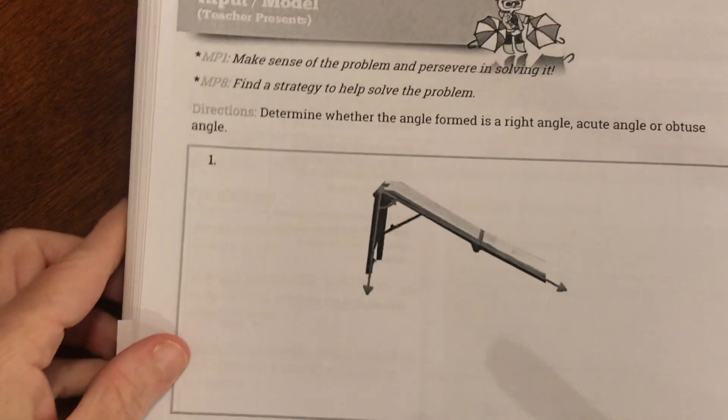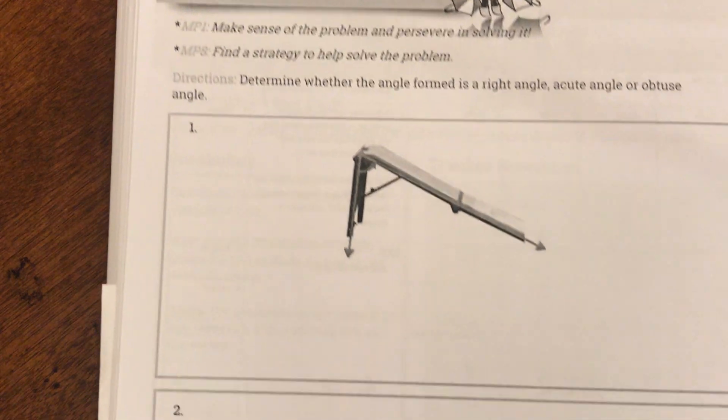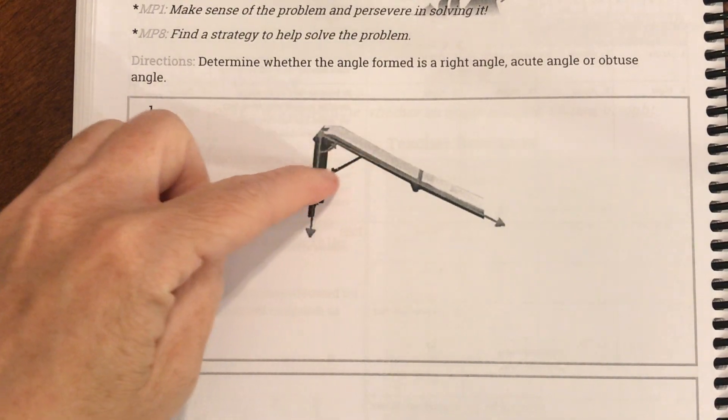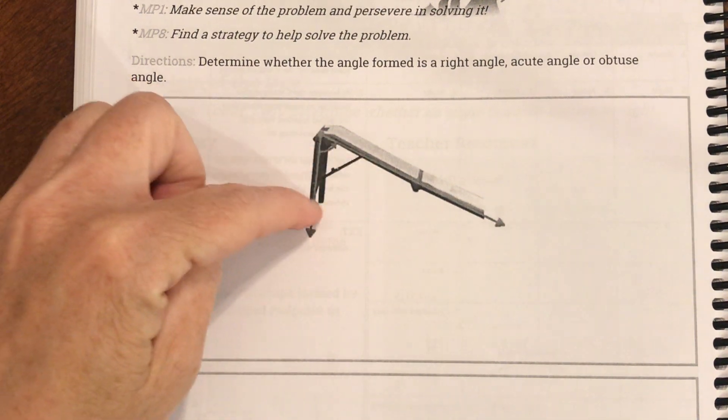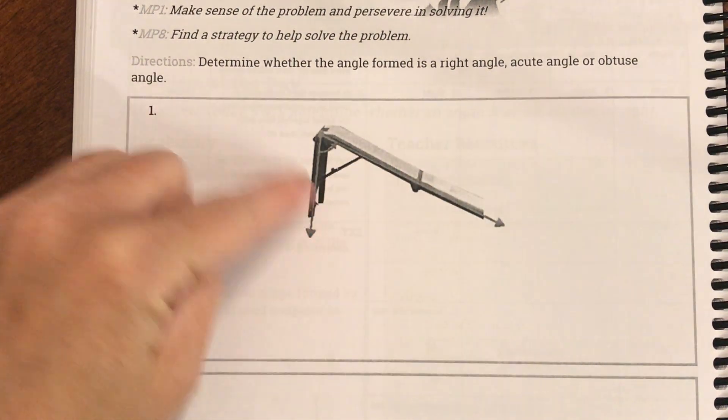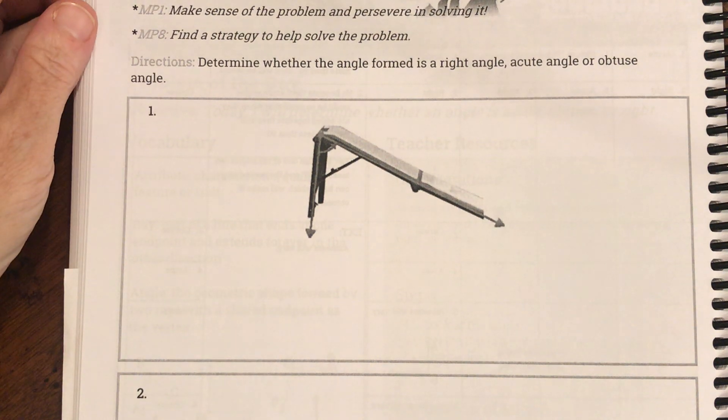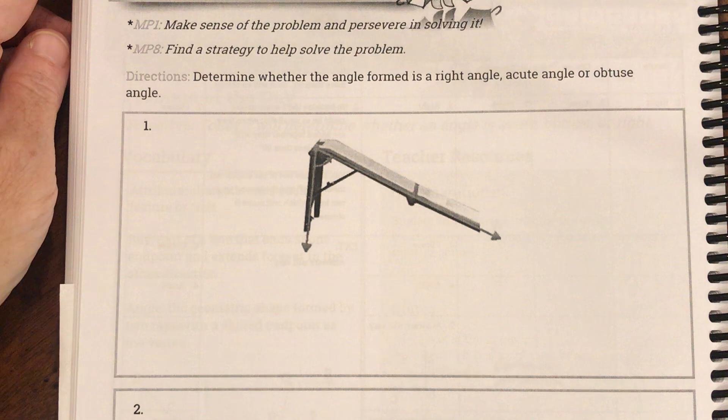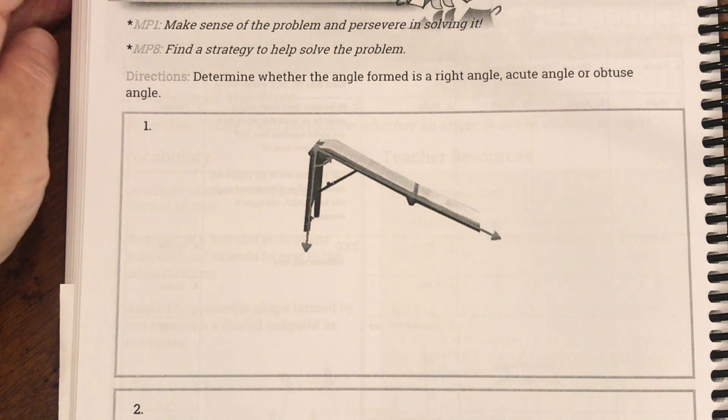I am going to get started and do some for you. If you want to put your pencil down. Here is my first problem. And my first problem looks like this. So, it looks like it's a slide. And they want to know this angle right here. So, it looks like it's a playground slide, and this is what they want to know. And my directions say, determine whether the angle formed is a right angle, acute angle, or obtuse angle.